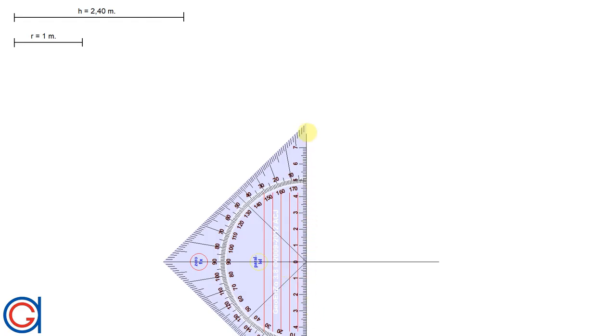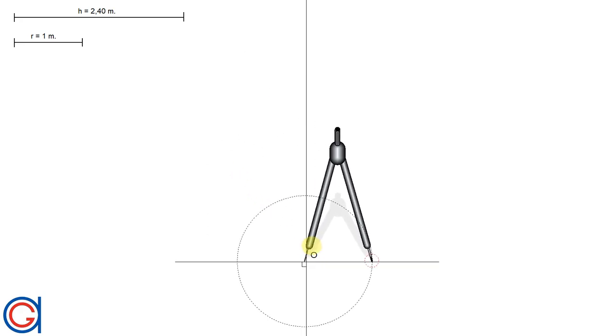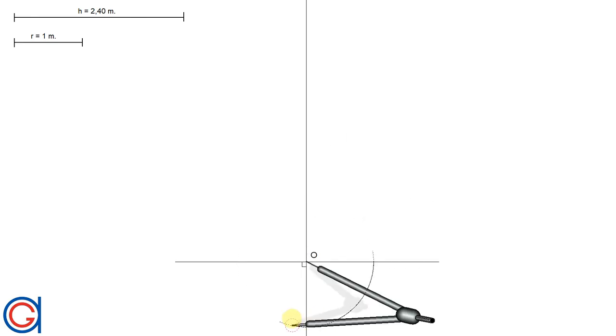So now that we have set up our horizontal and vertical axis, we're setting our compass to the given radius 1 meter. We set our compass on O, the origin, and draw a circle as can be seen here.